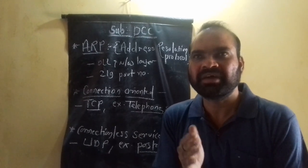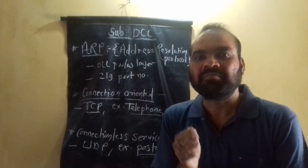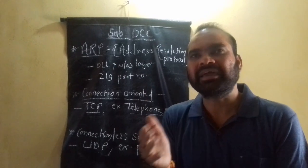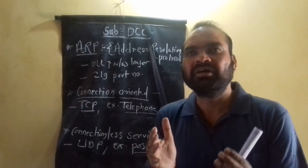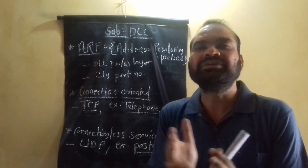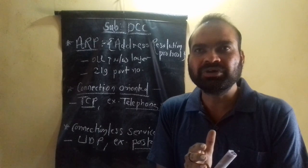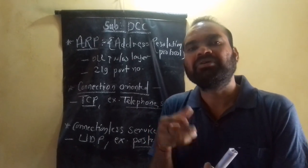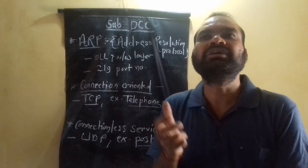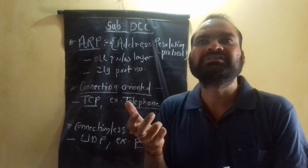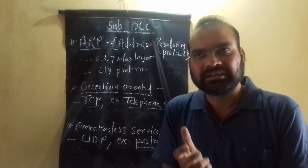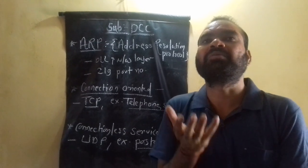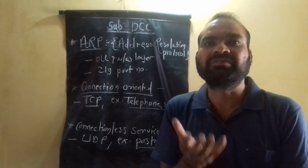ARP focuses on the IP address and MAC address. The IP address and MAC address are combined — or mapped — to each other. Then the particular information or packet is received by the receiver properly and successfully. That surety is provided through ARP protocol in the networking systems.